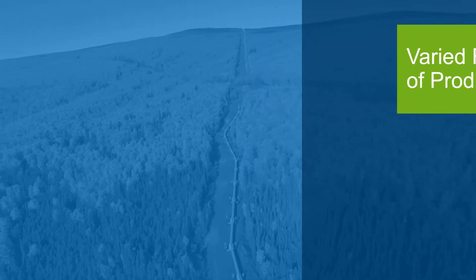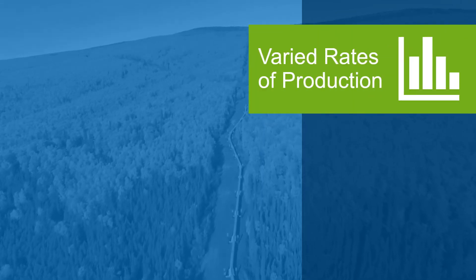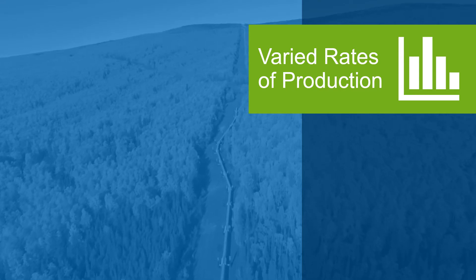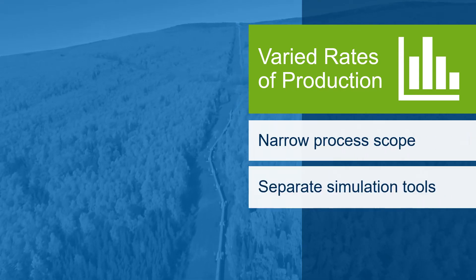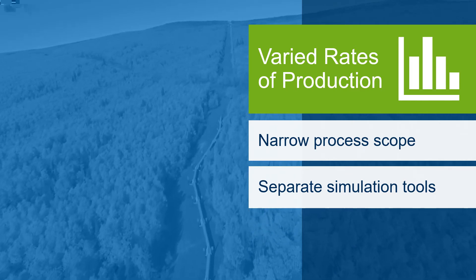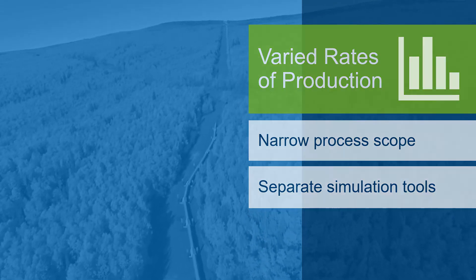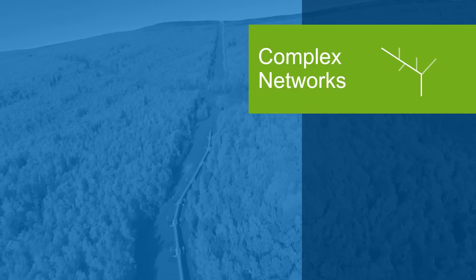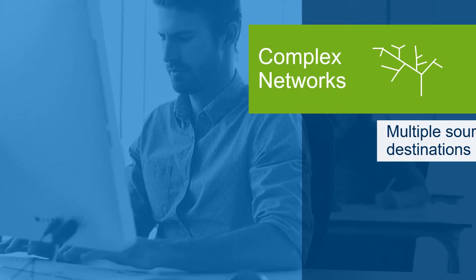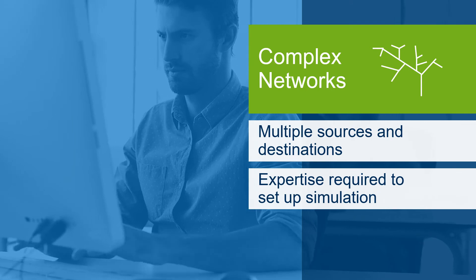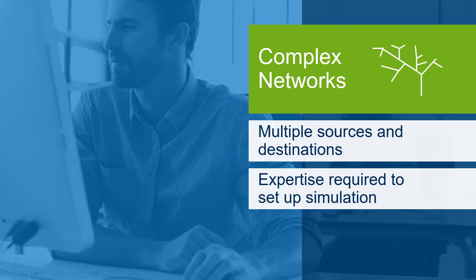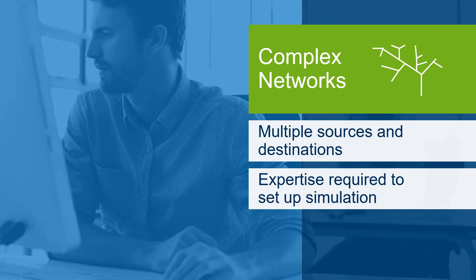With changing rates of production over time, pipelines need to be properly operated to optimize production. Often in production, pipelines and processing equipment are analyzed separately when important interactions may be at work. Moreover, the complexity of pipeline networks makes the challenge even harder to solve, with multiple sources and destinations — solving the network is inherently difficult and time consuming. Expertise is often required to set up these network simulations to get the right answer.